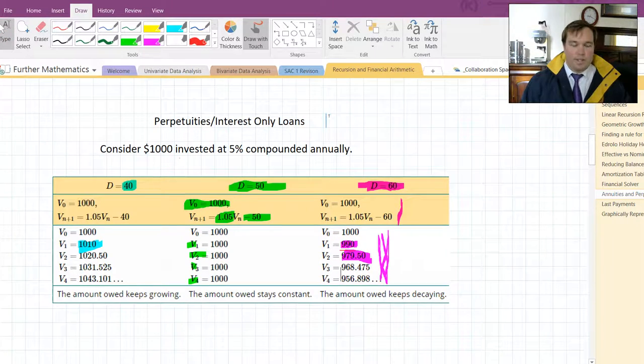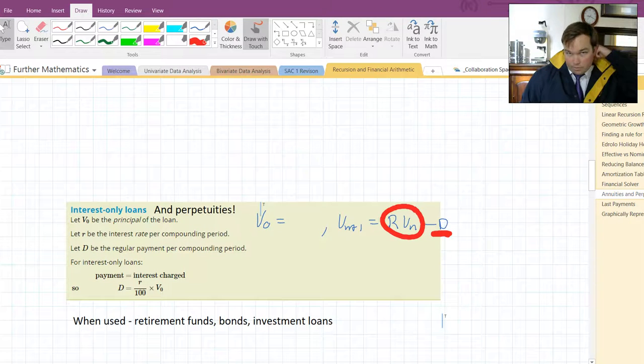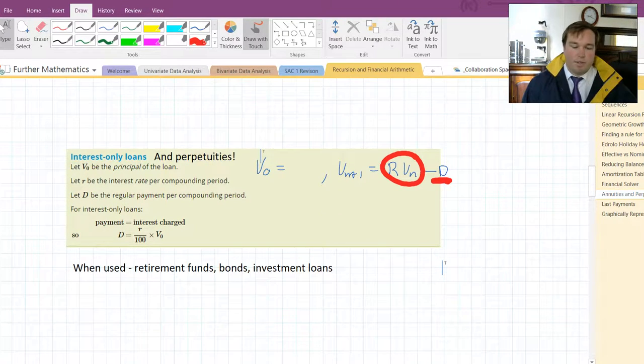So how do we look at this using Financial Solver? A couple of notes first. This works for interest-only loans and perpetuities, all perpetuities. So here, the interest charged is the same as the repayment.